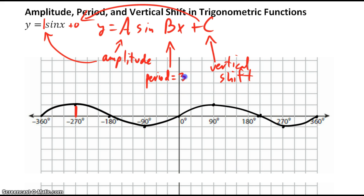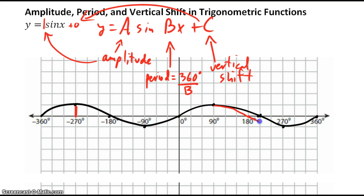The period has to do with b, but b is not the period. The period is 360 degrees over b. Since b is 1 here — there's an invisible 1 in front of the x — the period is 360, meaning it repeats every 360 degrees.